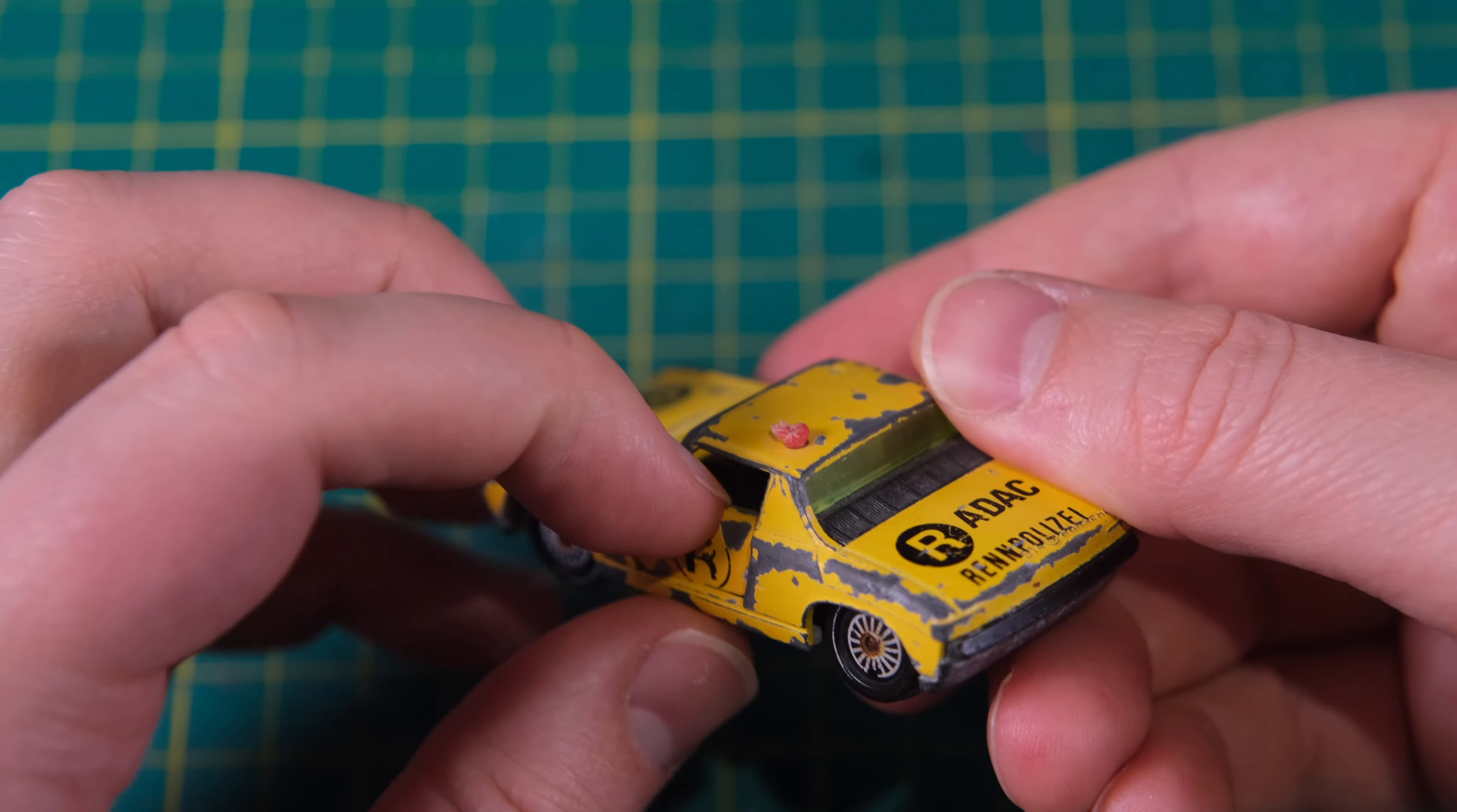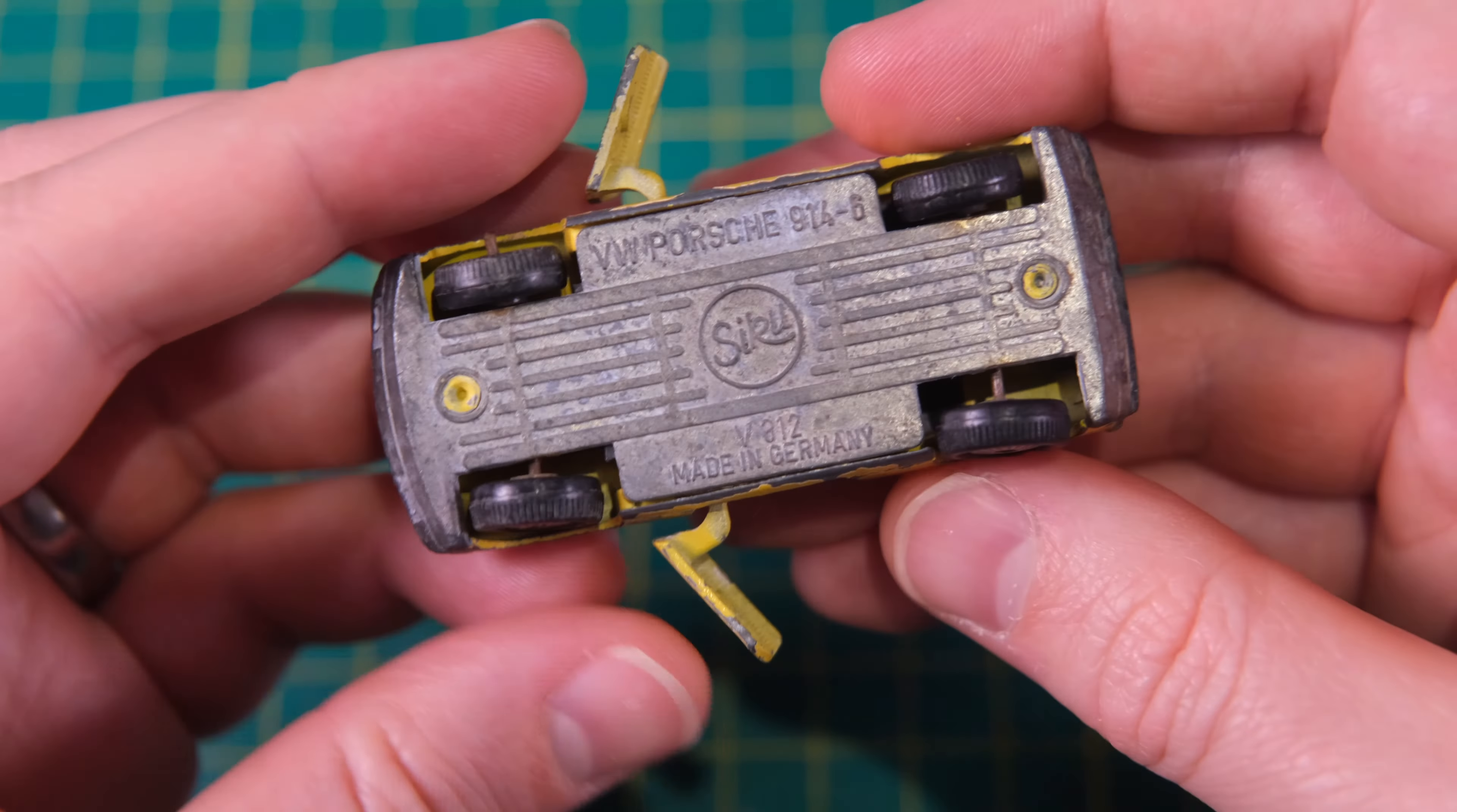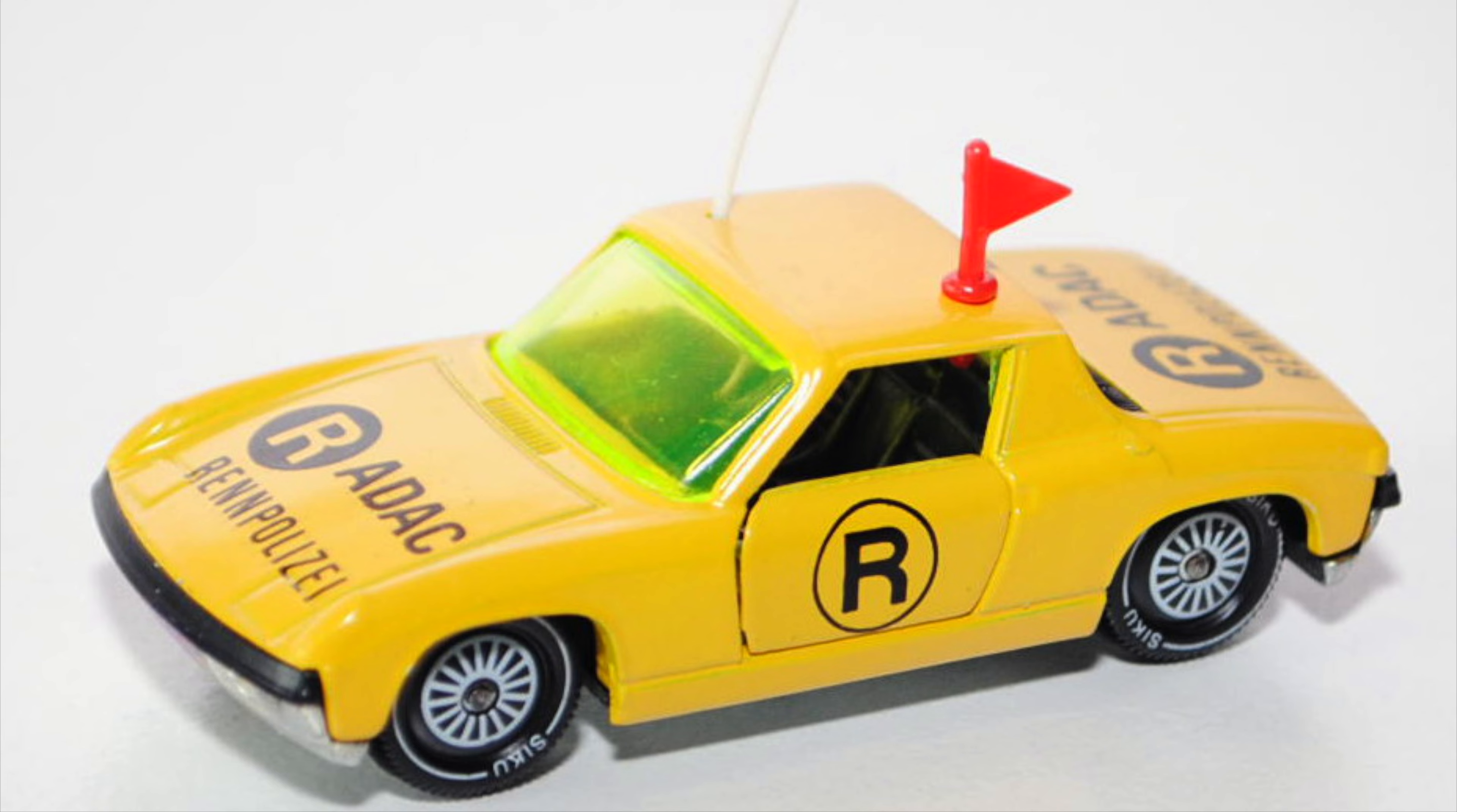What's more, this ADAC version had a white plastic aerial and plastic flag mounted to the roof. Most of those have long since gone. To give you a better idea of how it should look, here's a mint matching example.